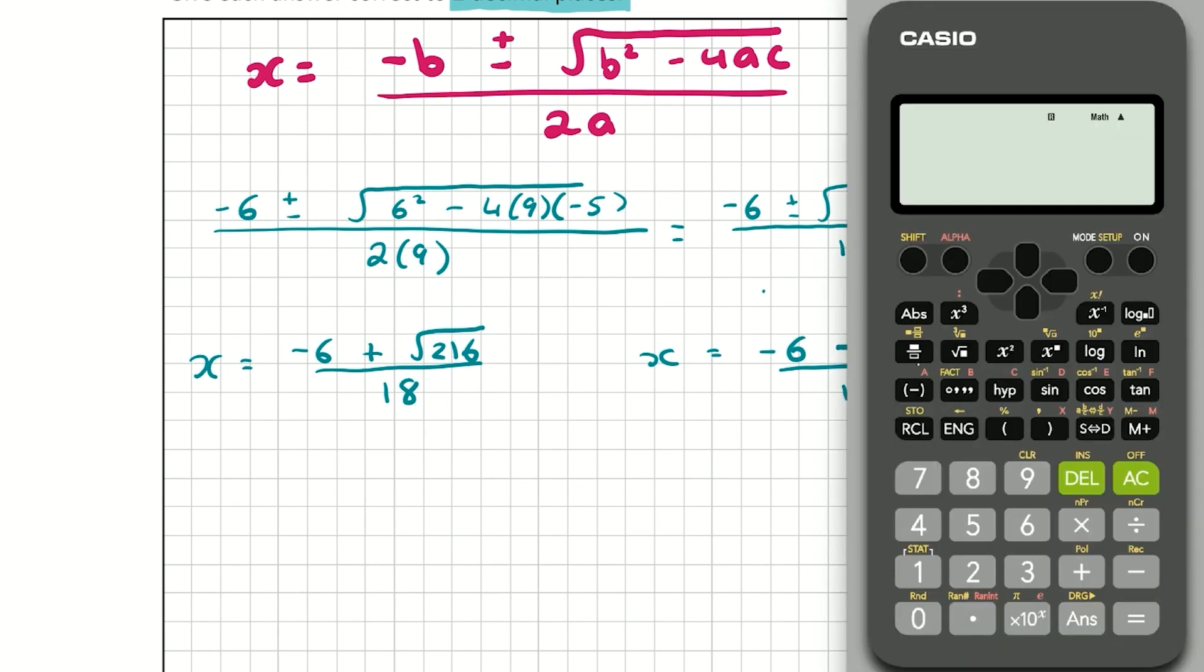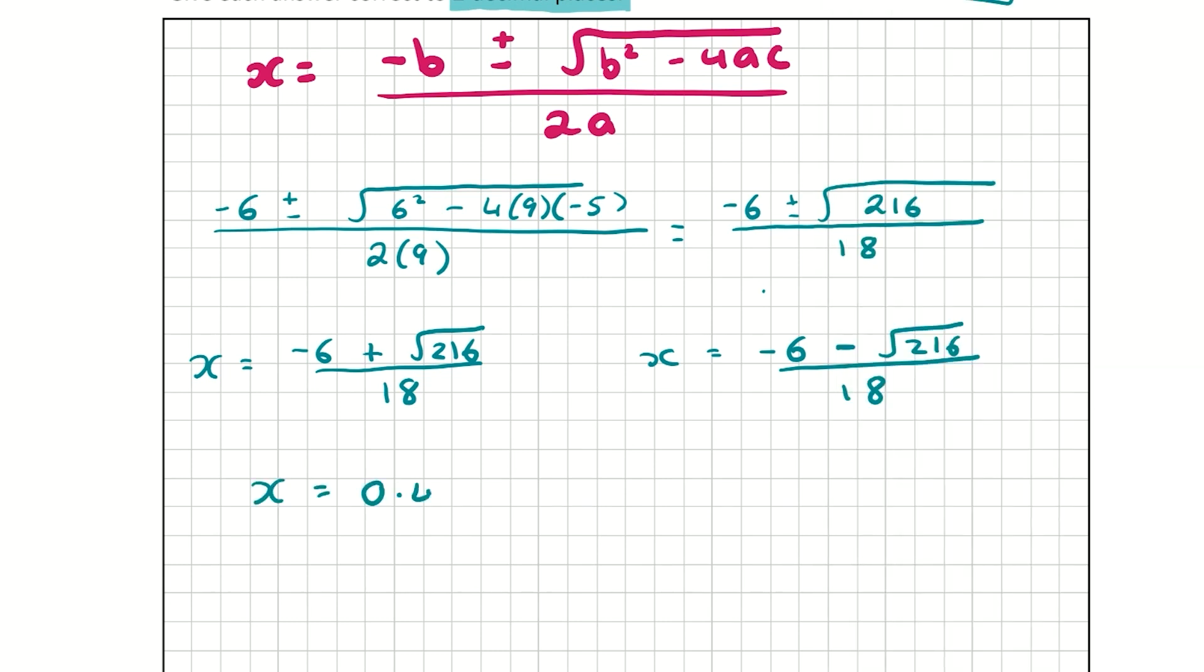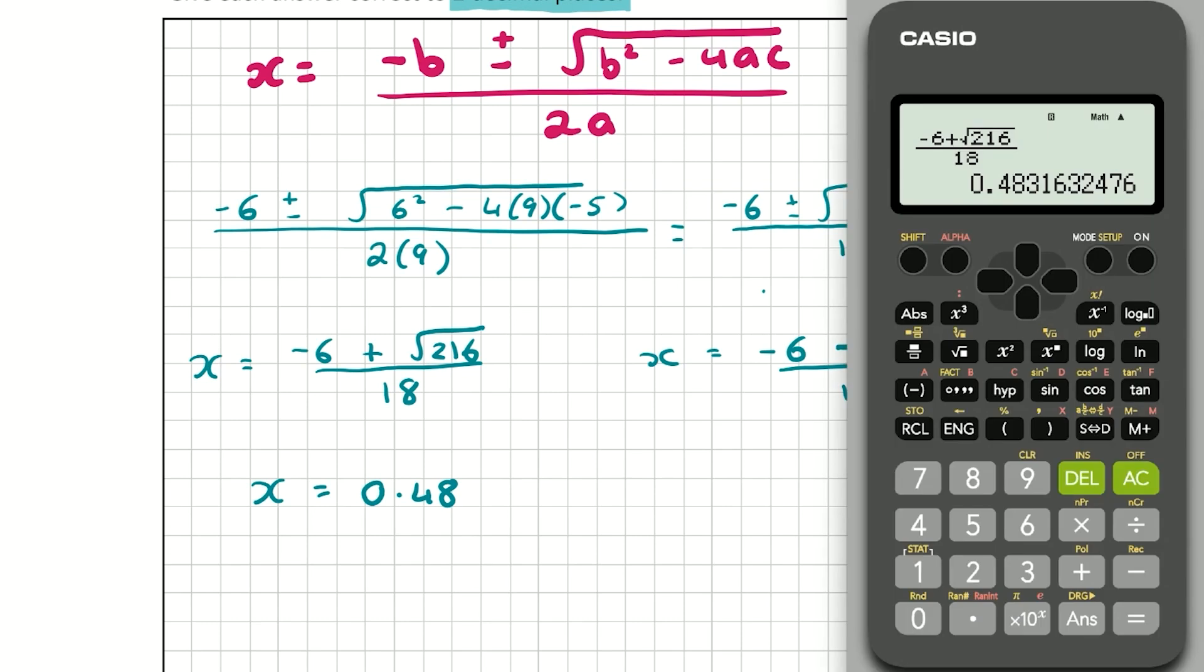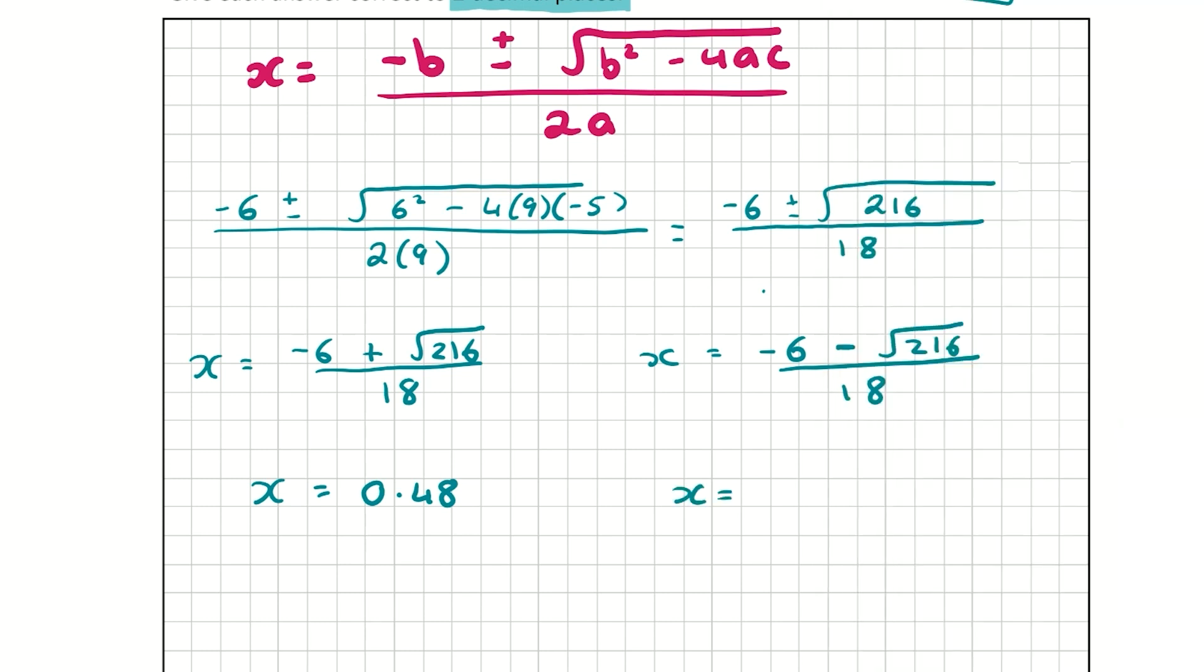So these are going to be our two answers. Let's work out the one on the left first. So putting that into my calculator: minus 6 plus root 216 over 18. And correct to two decimal places, that is 0.48. And now we just need to change one sign. So the easiest thing to do is press the back button on your calculator and change this positive sign to a negative sign. And then press equals. And we get minus 1.149. So that is minus 1.15, correct to two decimal places. So x equals 0.48 and x equals minus 1.15. These are our two correct answers. And for getting these right, you're going to get a total of 10 marks.